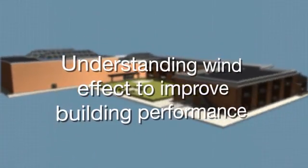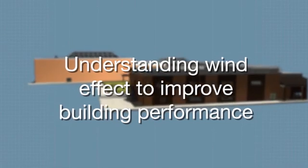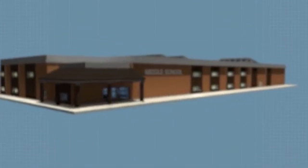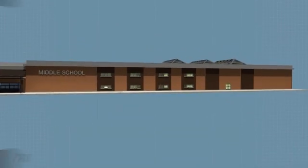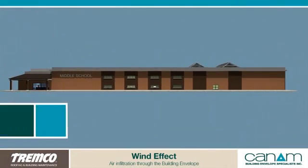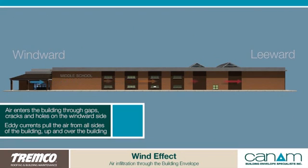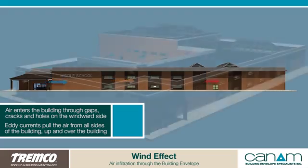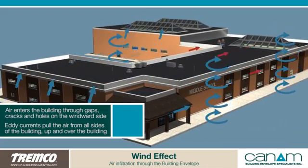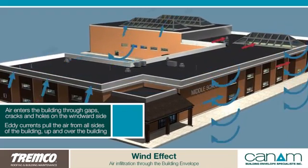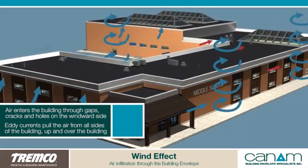Understanding wind effect to improve building performance: the phenomenon known as wind effect happens when unconditioned air enters a building through gaps, cracks, and holes on the windward side. When this happens, eddy currents pull air from all sides of the building up and over the building.